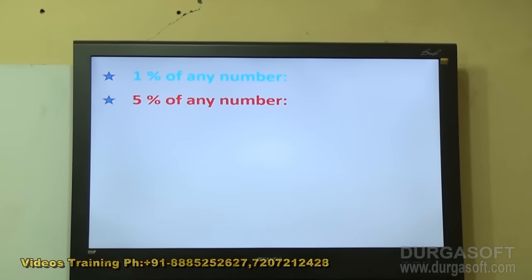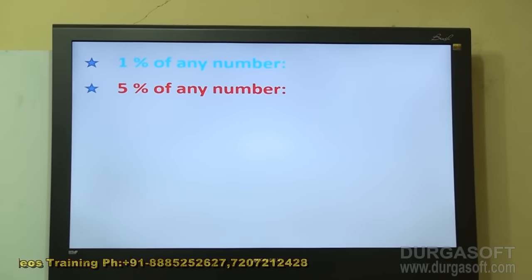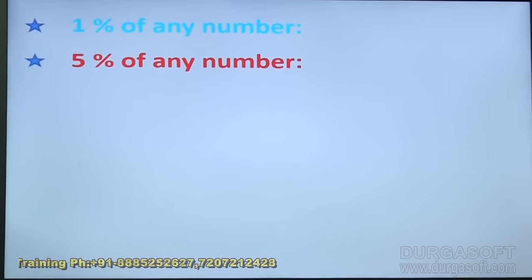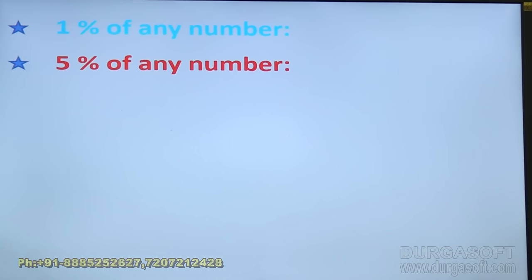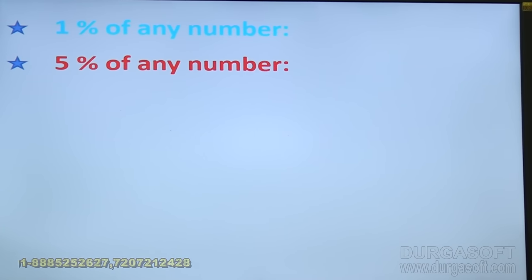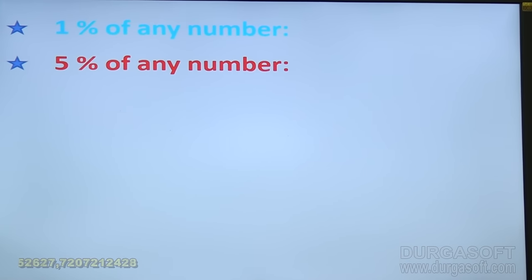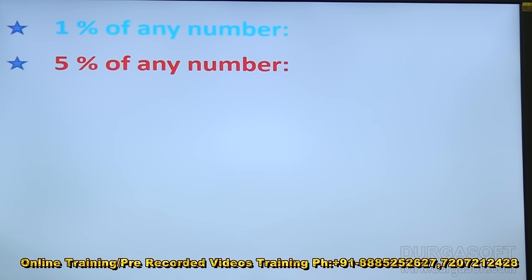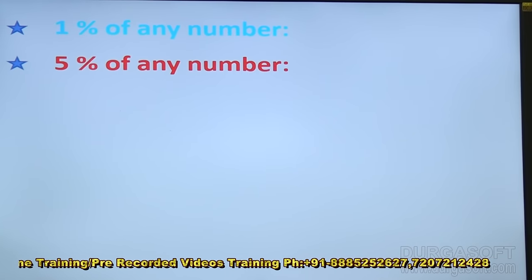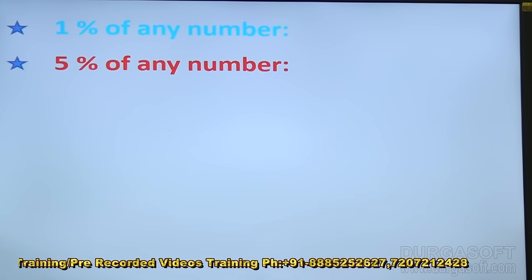To calculate 5% of any number there are two methods. Method one: find 10% and halve it. Method two: halve the given number first and then find 10%. Which technique to use depends on whether the number ends in zero.